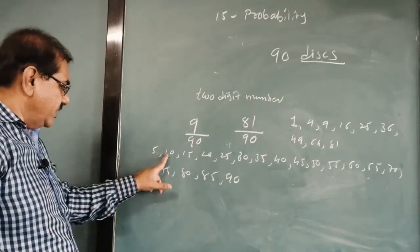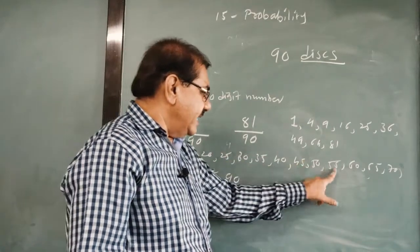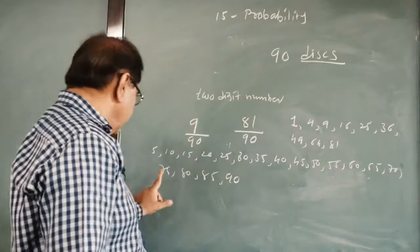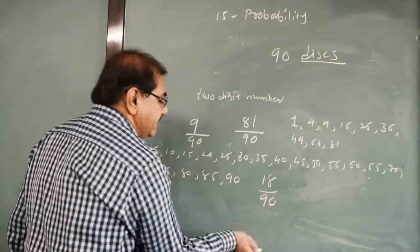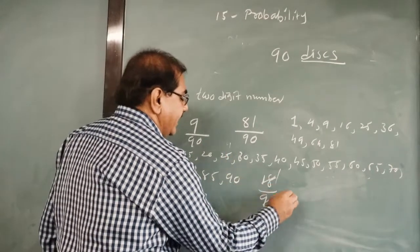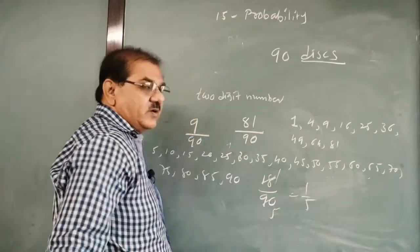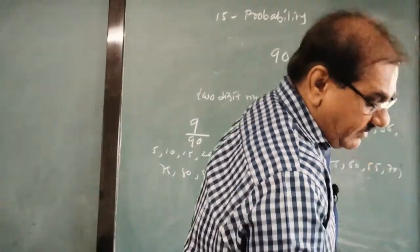Calculate, how many they are? 1, 2, 3, 4, 5, 6, 7, 8, 9, 10, 11, 12, 13, 14, 15, 16, 17, 18. So it is 18 upon 90. Simplify it. I do it for you. 18 ones are 18, 18 fives are 90. So probability is 1 upon 5. Easy. So easy the questions are.